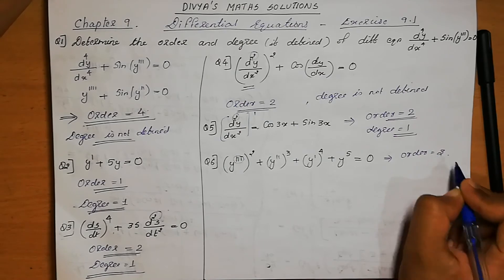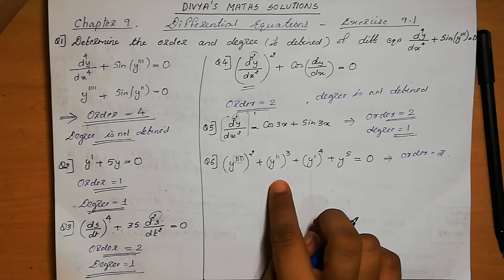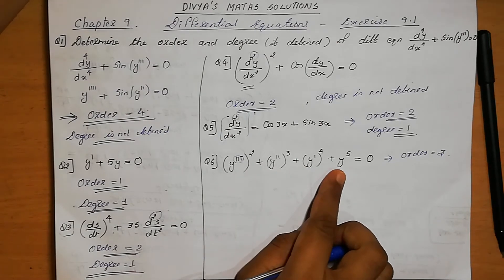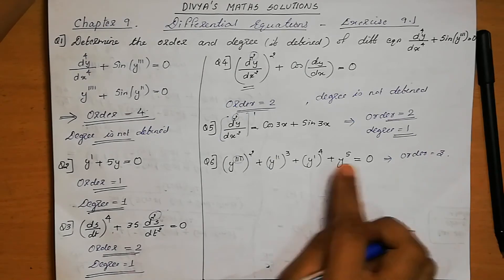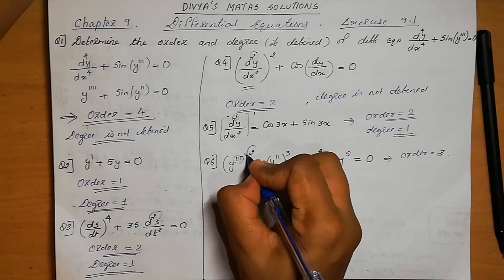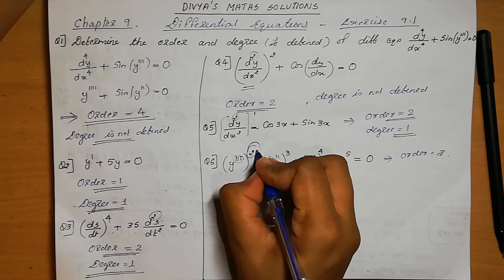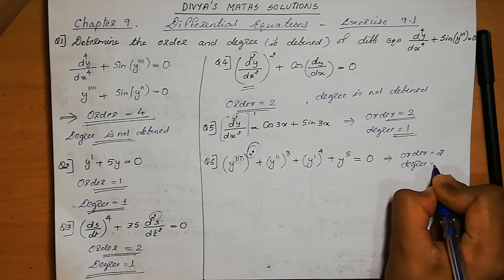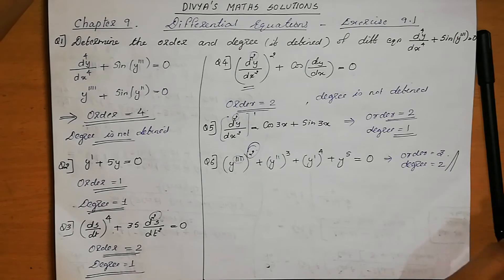The order is 3. The given differential equation is in the form of a polynomial equation. We check the power of the highest order term, which is the third derivative, and its power is 2. Therefore, the degree equals 2. Order = 3 and degree = 2.